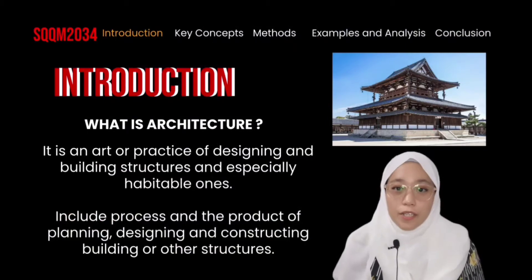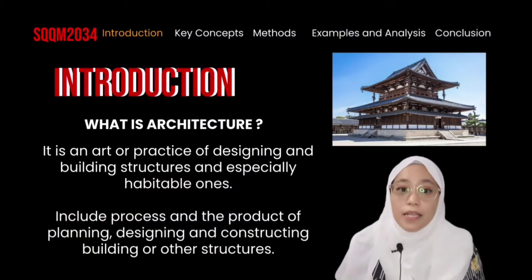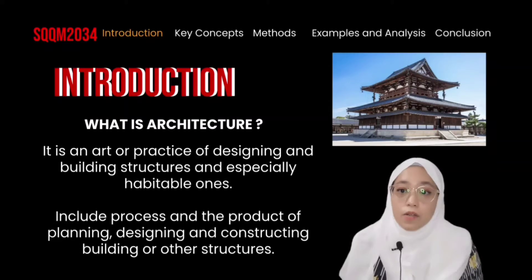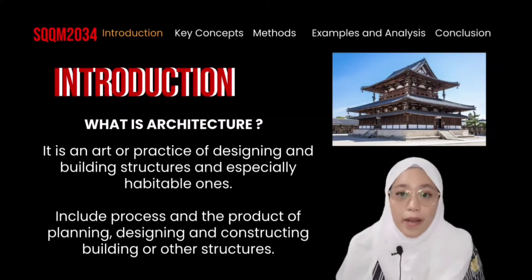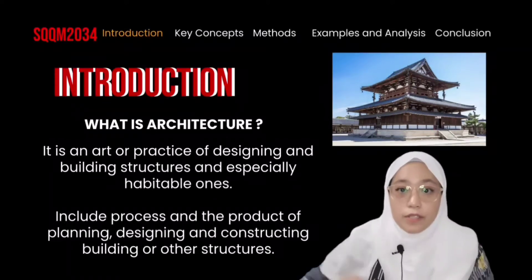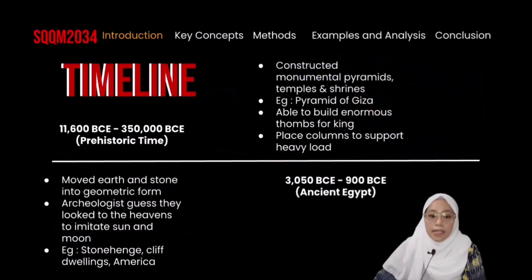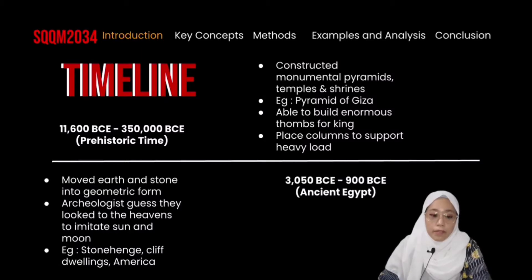For the introduction, first we need to know what is architecture. Architecture is the art or practice of designing and constructing buildings. It is also both the process and the product of planning, designing, and constructing buildings or other structures. There are several timelines for architecture history, but it all started in prehistoric times, from 11,600 BCE until 350,000 BCE, where people moved earth and stone into geometric form.